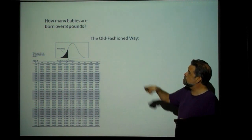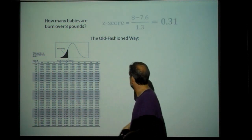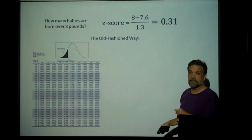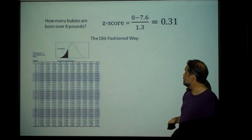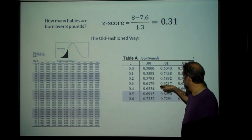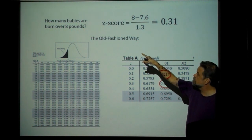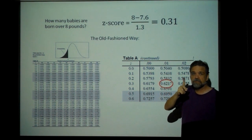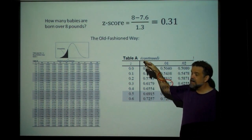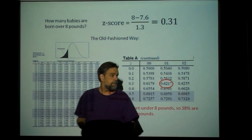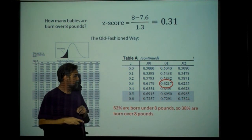How many babies are born over 8 pounds? First, calculate the z-score: 8 minus 7.6 divided by 1.3 is approximately 0.31. Looking up 0.31 in the table, I get 0.6217. But does that mean 62% of babies are born over 8 pounds? No — the table always gives the area to the left. So 62% of babies are born under 8 pounds, which means about 38% are born over 8 pounds. You have to be careful about whether you're doing a less than or greater than calculation.